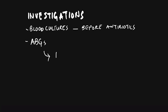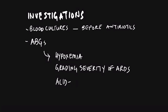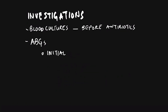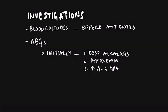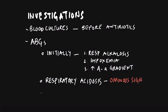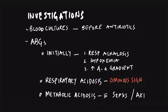Arterial blood gases (ABGs) is an important modality of investigation. It helps in demonstrating hypoxemia, grading the severity of ARDS, and knowing the acid-base status. On ABGs there will be hypoxemia and respiratory alkalosis initially, with an elevated alveolar-to-arterial gradient. Respiratory acidosis, if present, is an alarming sign indicating severe ARDS. Metabolic acidosis from ARDS itself is unusual and if present may be due to sepsis or acute kidney injury.